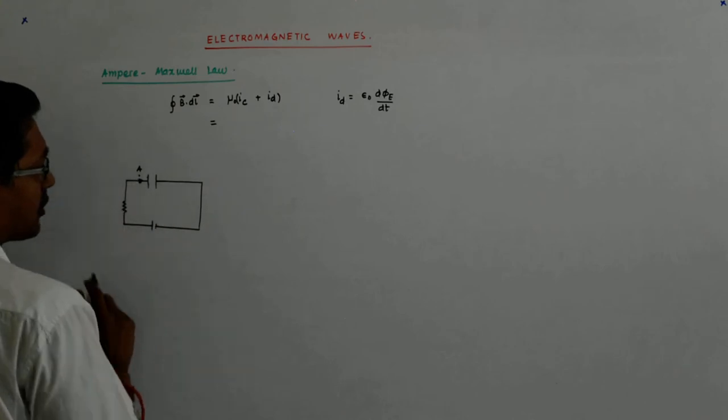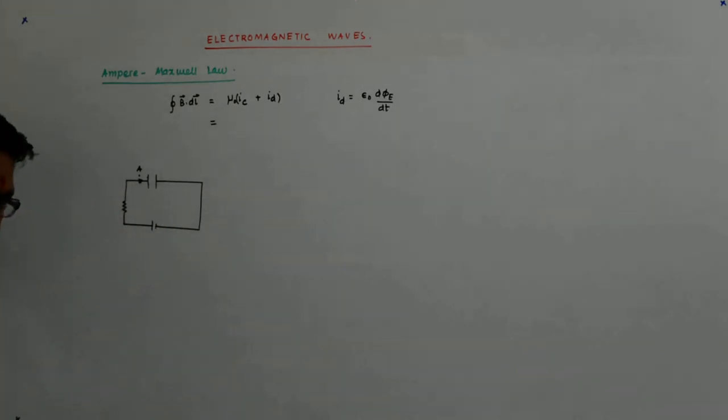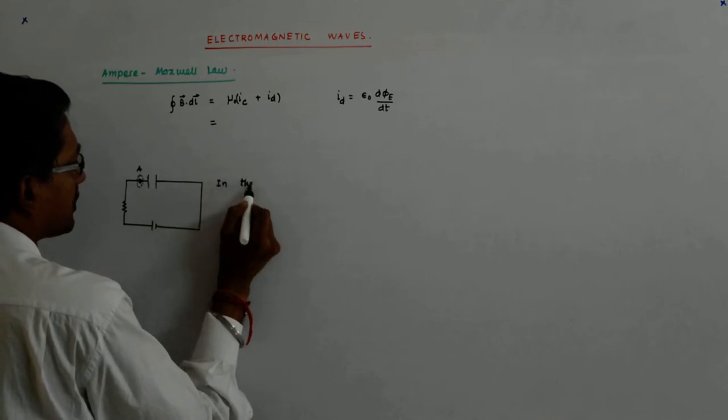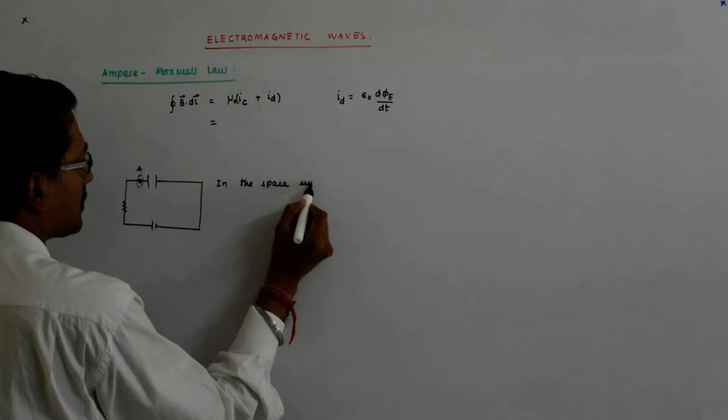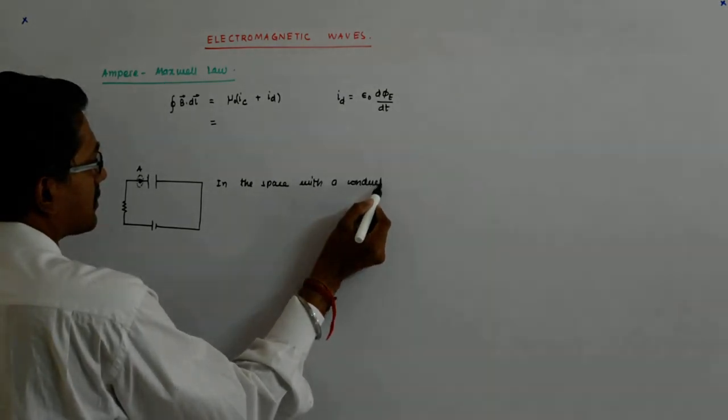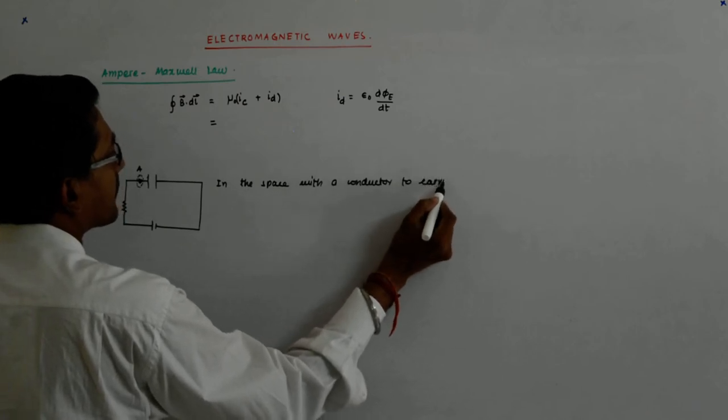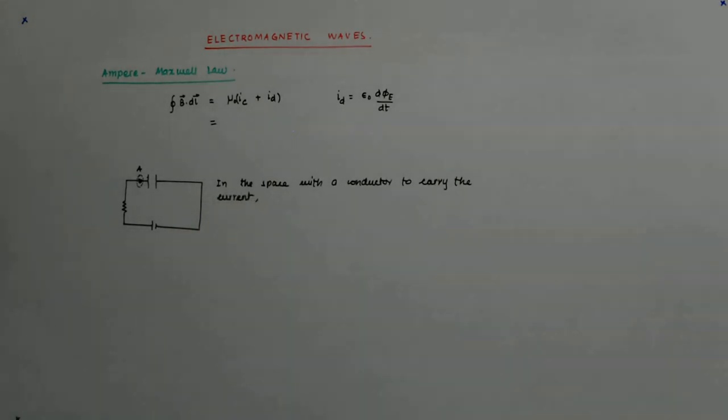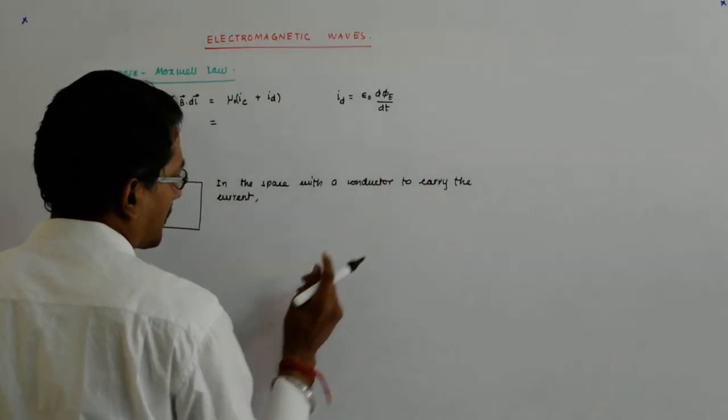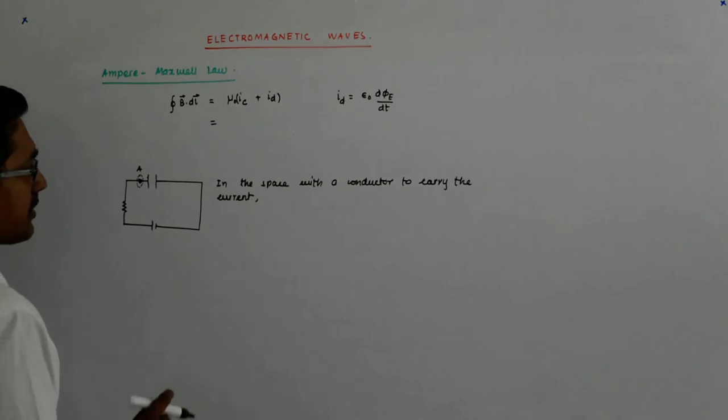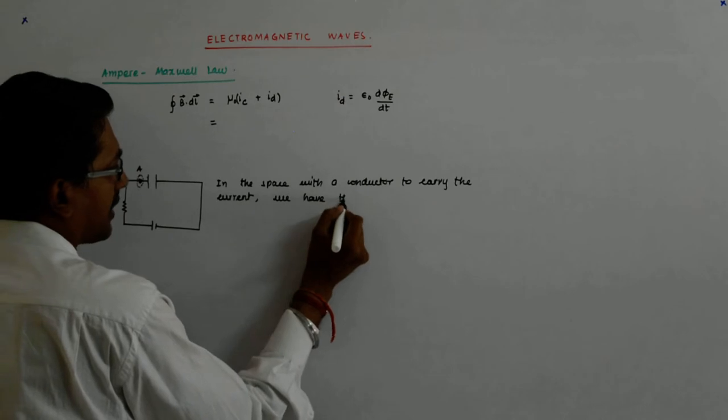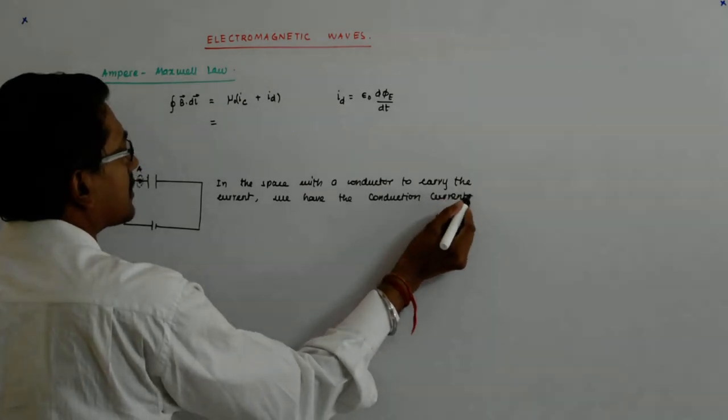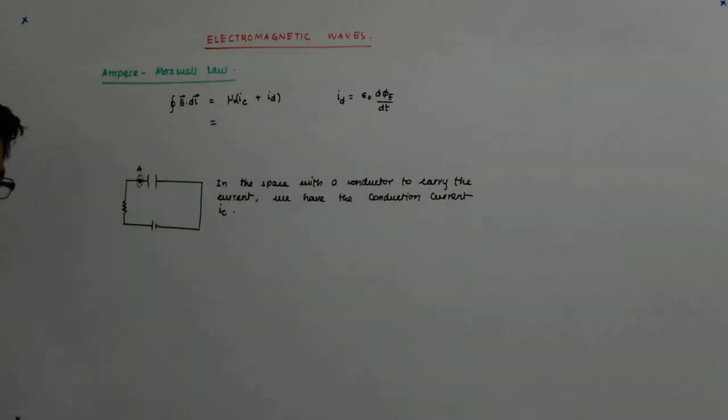So in the space where there was wire, there is a conduction current. In the space with a conductor to carry the current, we have the conduction current, IC, which was the Ampere's law.